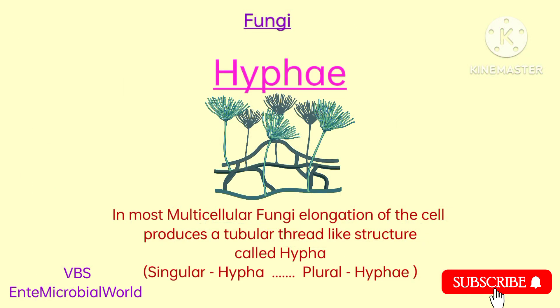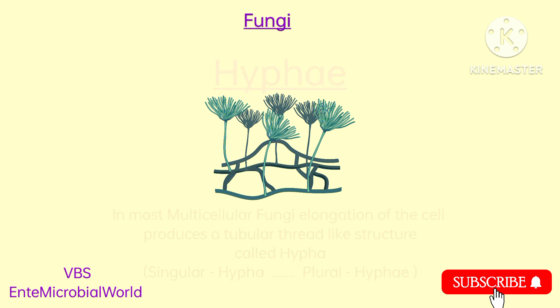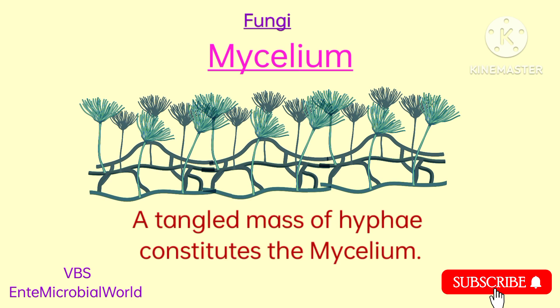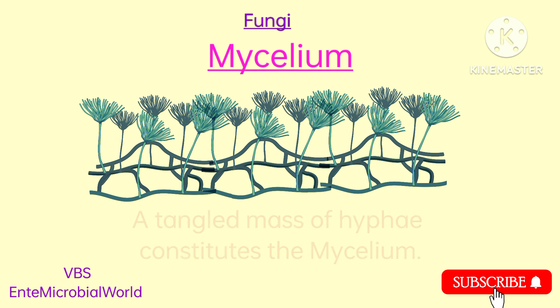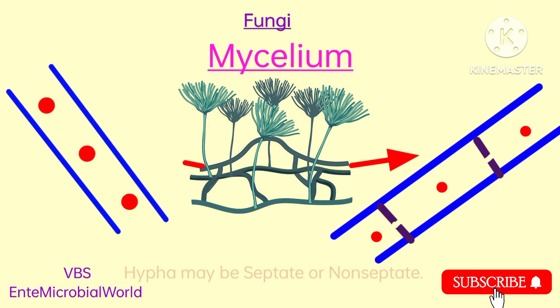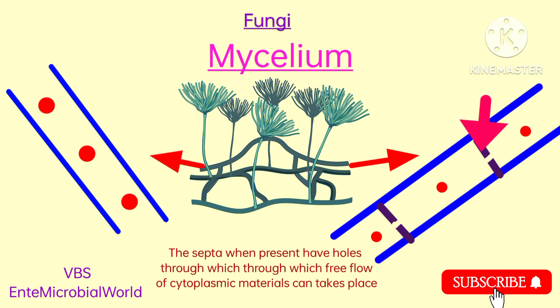In most multicellular fungi, elongation of the cell produces a tubular thread-like structure called hyphae. Next, we are going to see what is a mycelium. A tangled mass of hyphae constitutes the mycelium. Fungi which form mycelia are called molds or filamentous fungi. Hyphae may be septate or non-septate. The septa, when present, have holes through which free flow of cytoplasmic materials can take place.